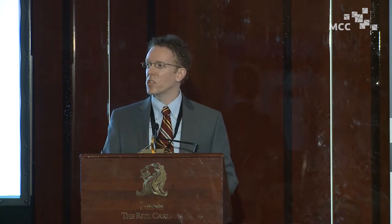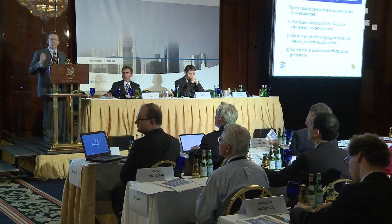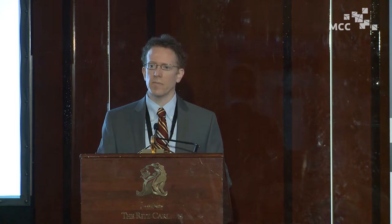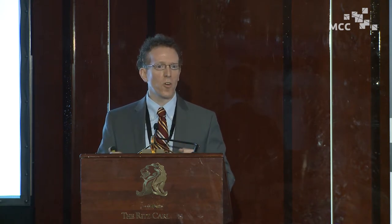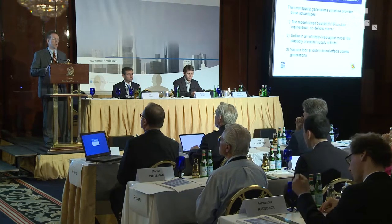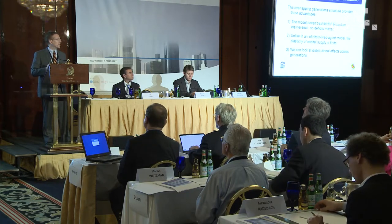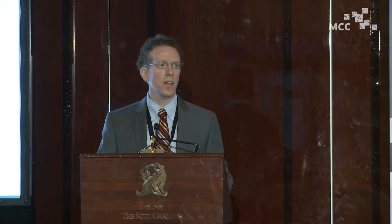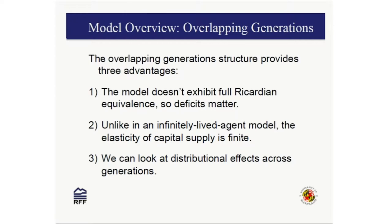Overlapping generations gives us three key advantages for looking at this kind of problem. First, we don't have Ricardian equivalence. In a lot of other models used to look at carbon taxes in a dynamic setting, if the government runs a deficit, individuals save to compensate because they know they'll have to pay that money back someday, and the deficit doesn't actually affect the overall path of the economy at all. That's obviously highly unrealistic. Second, if you want to model the effects on capital — the effects of a carbon tax on capital or recycling revenue to cut capital taxes — you need to be modeling capital accurately. In a lot of other dynamic models, you effectively get an infinite elasticity of capital supply, making capital taxes look even more distortionary than they actually are. And third, the most obvious point, we can look at distribution across generations by having those different generations in the model.